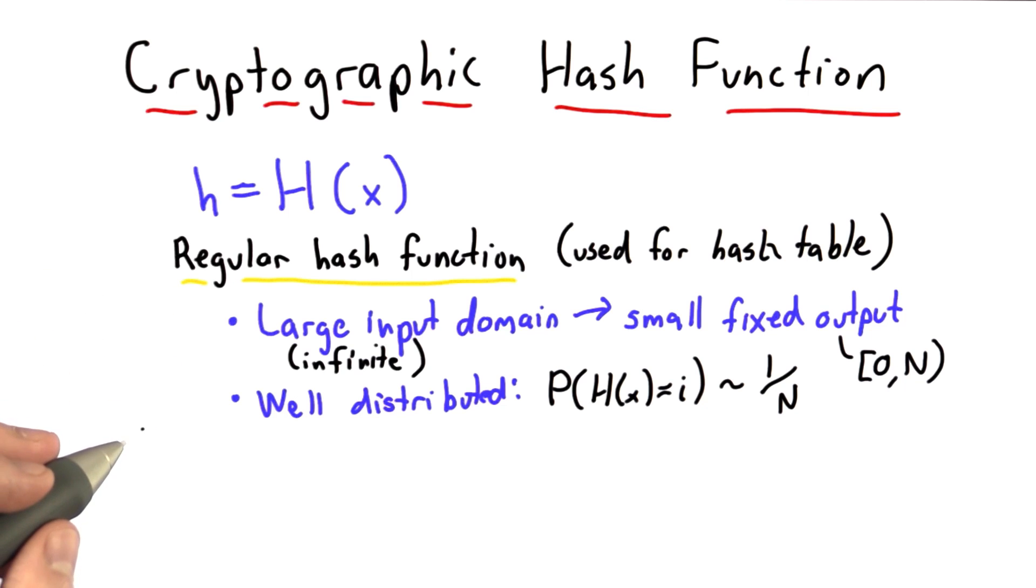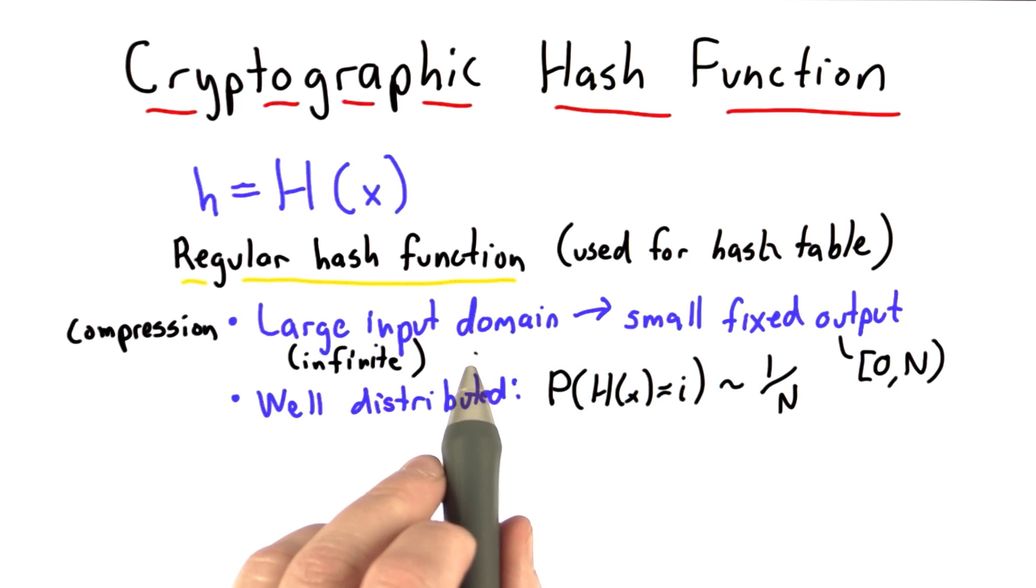This is not enough for cryptographic commitments. If we just had these two properties, well it might be easy to find other x values that map to the same thing. And we saw that one of the things that we need for a cryptographic hash function is to make it hard for Alice to be able to do that, otherwise she could find two inputs and cheat in the coin tossing game. This first property of mapping a large input domain to a small fixed output we'll call compression.